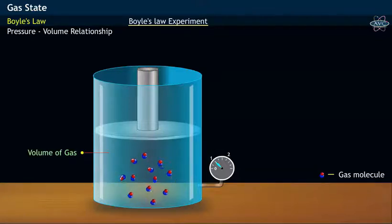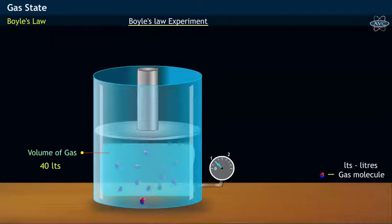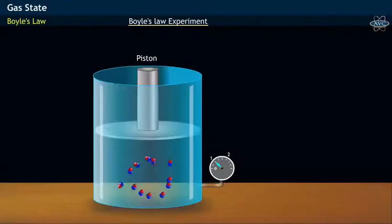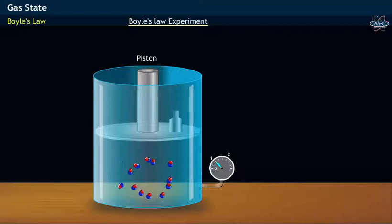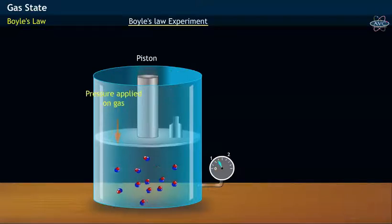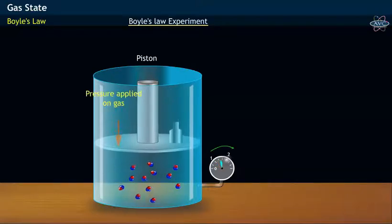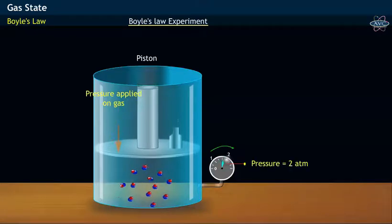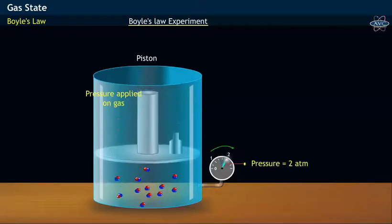Let the volume of the gas in the container be 40 liters at one atmospheric pressure. When a certain weight is placed on the piston, the pressure applied on the gas is doubled to about 2 atmospheres, as shown in the meter.